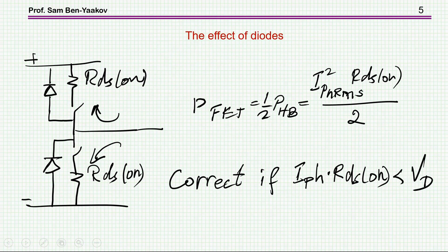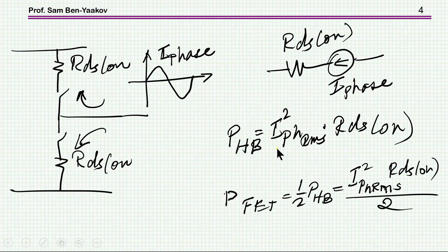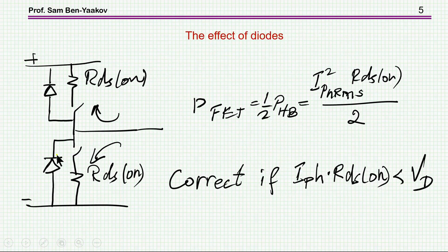Now, what do we do when we have a diode, like in a silicon MOSFET? Well, as long as the voltage across RDS on is lower than the breakpoint of the diode, then this approximation holds. However, if the voltage drop on the RDS on is approaching that of the diode, then things are becoming more and more complicated, and this approximation is incorrect, so you cannot use it.